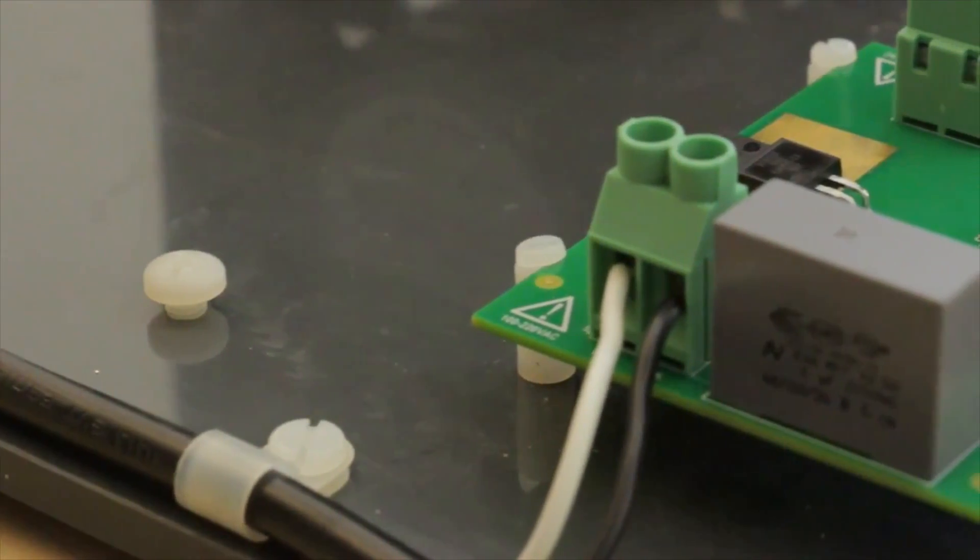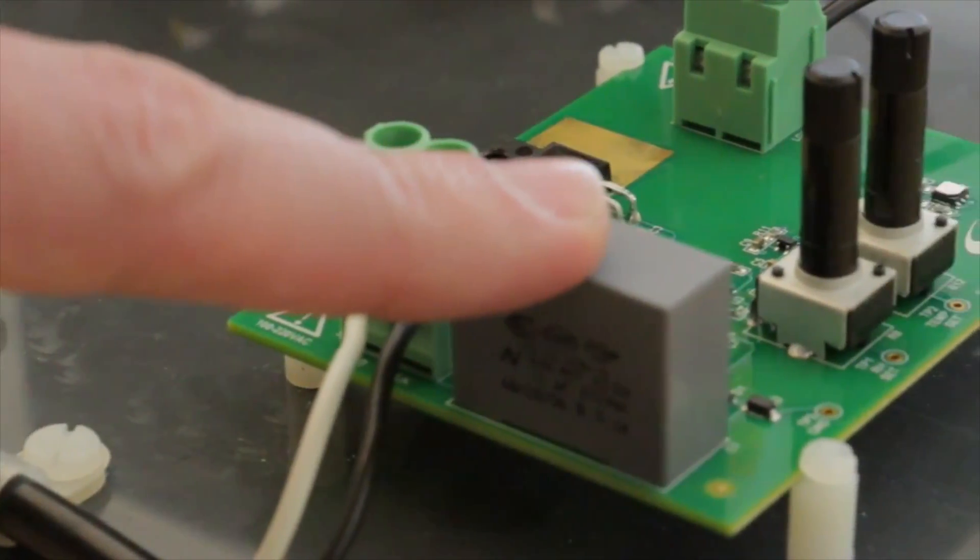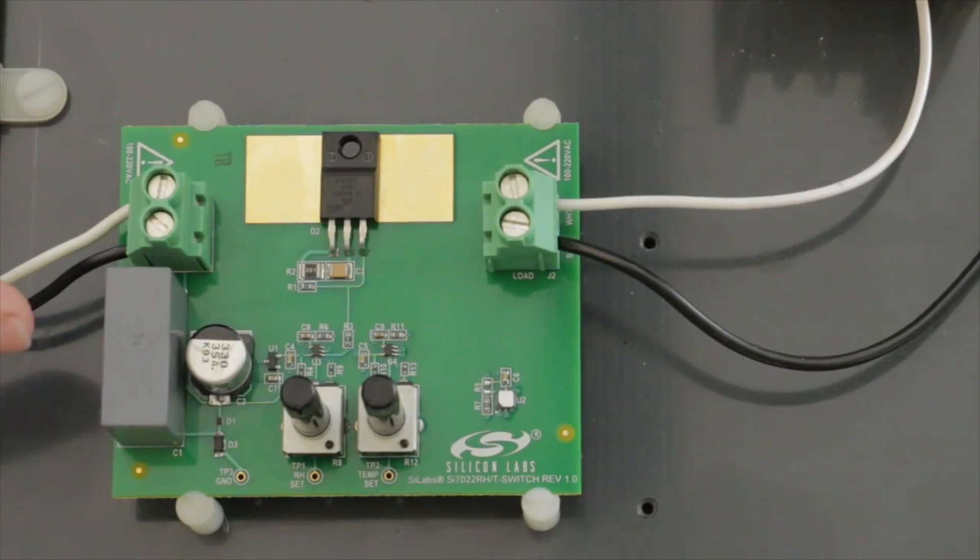The circuit uses a large capacitor to drop the voltage down to the three volts necessary for the operation of the humidity sensor and of the op-amp comparators.